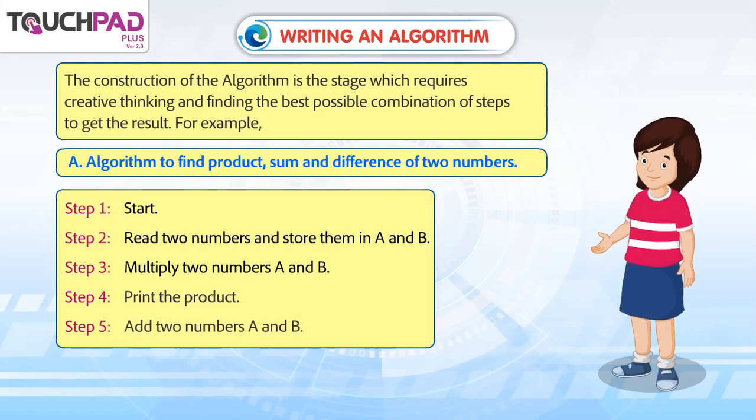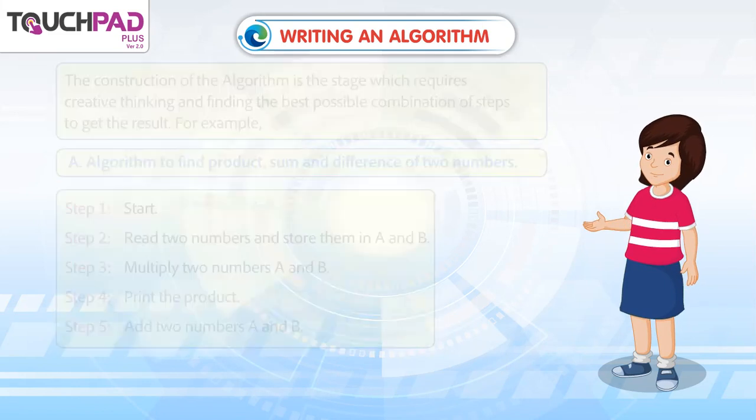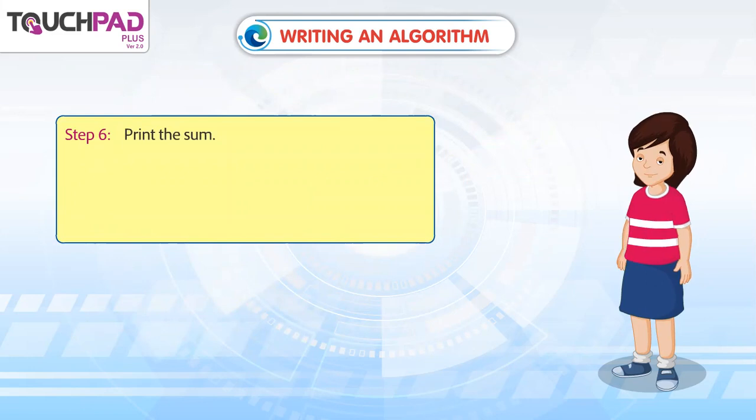Step 5: Add two numbers A and B. Step 6: Print the sum.